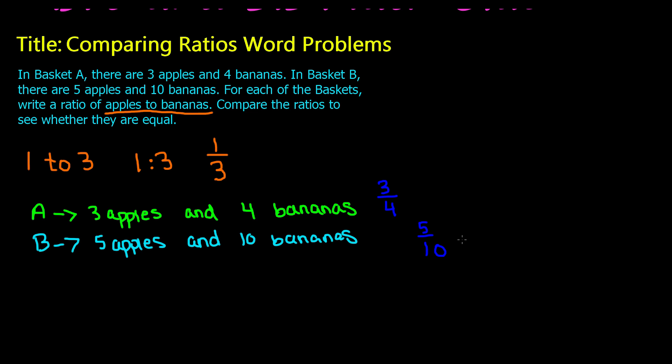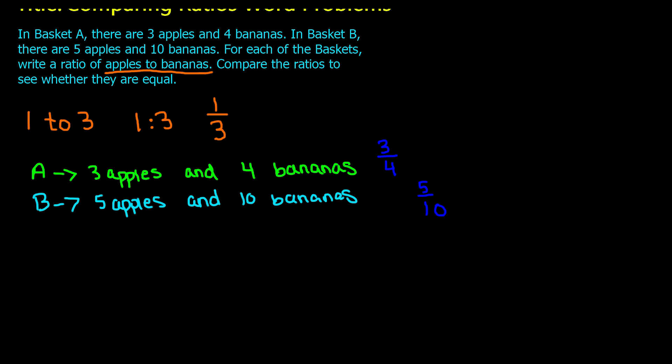Now to compare these ratios, all we have to do is write them down. We have three over four and five over ten. When we're comparing, we're trying to see if they are equal to one another. If we put an equal sign, now we have three over four is equal to five over ten. In order to see whether these ratios are equal, all we have to do is cross multiply.